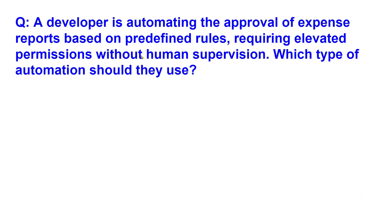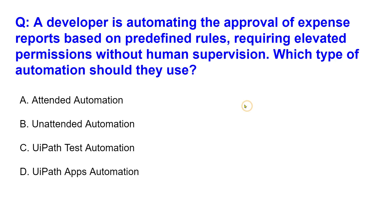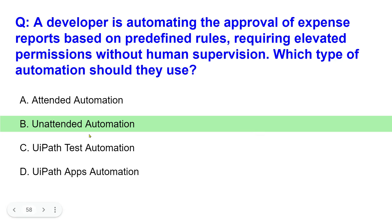Next question: a developer is automating the approval of expense reports based on predefined rules, requiring elevated permissions without human supervision. The keyword is 'without human supervision.' Which type of automation should they use? Options: attended, unattended, UAPA test automation, or UAPA apps automation. The answer is B — unattended automation.